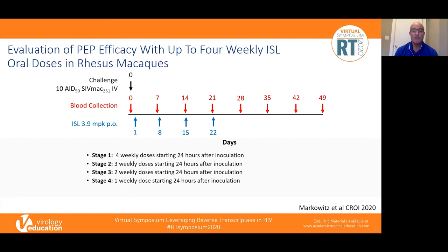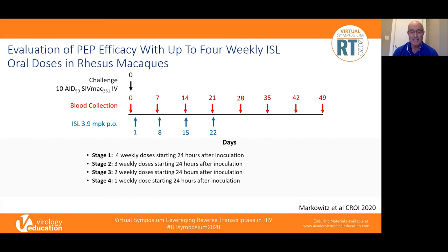We found complete protection all the way down to stage four, and at stage four with the one weekly dose we did get two animals become infected. Importantly, if you translate the levels of drug that were completely protective, it's believed we could probably give a single dose orally to an exposed human — because of the differences in half-life — and probably achieve protection for the month. Very exciting data, though not sure exactly how to do that clinical trial.